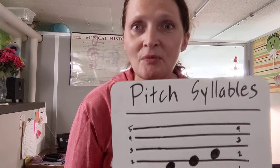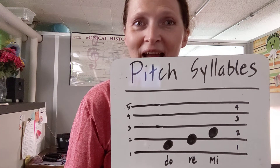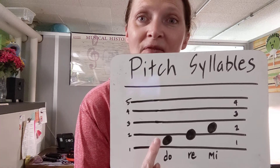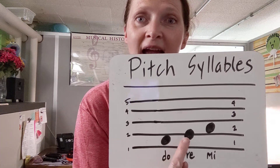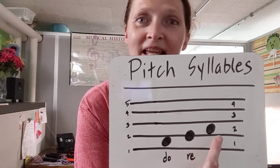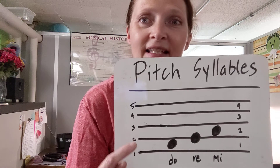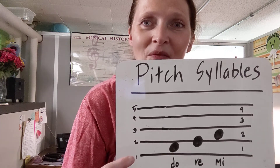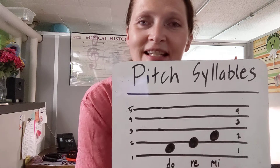We're going to work with three of them — Do, Re, and Mi. Do is on the first space, Re is on the second line, and Mi is on the second space. This is a staff. I know you've seen that before. We have five lines and four spaces.